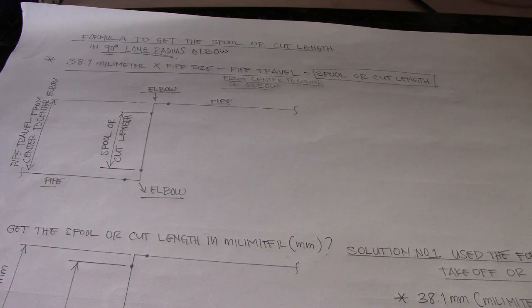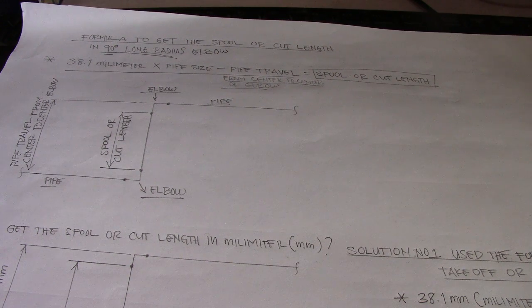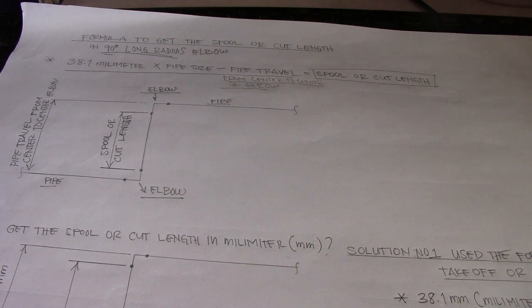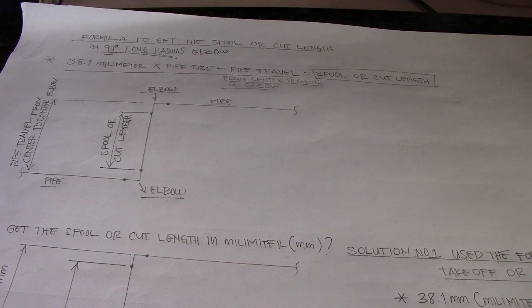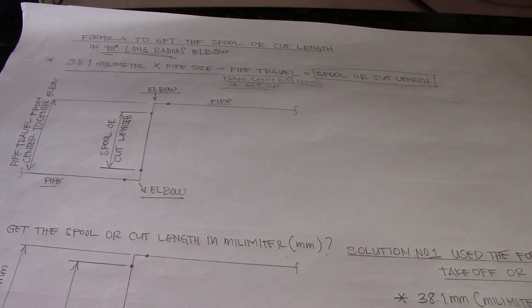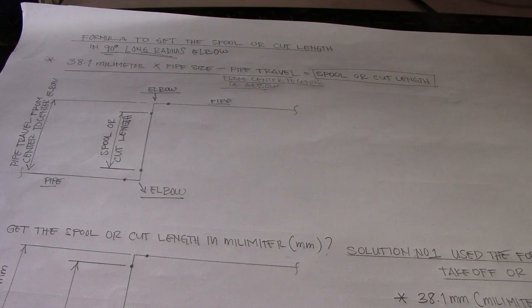How to get the spool using the formula of 90 degrees and also 45 degrees take off. This is our topic last Friday, it's about 45 degrees and 90 degrees using formula to find the take off of the 90 degrees elbow and 45 degrees elbow.